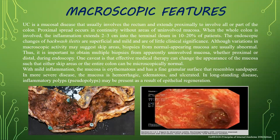Ulcerative colitis is a mucosal disease that usually involves the rectum and extends proximally to involve all parts of the colon in continuity, without areas of normal mucosa. When the whole colon is involved, inflammation extends two to three centimeters into the terminal ileum in 20 percent of patients. Endoscopic changes from backwash ileitis are superficial and mild and are of little clinical significance. Variation in macroscopic activity may suggest skip areas; biopsies from normal-appearing mucosa are usually abnormal. Thus, it is important to obtain multiple biopsies from apparently uninvolved mucosa during endoscopy.